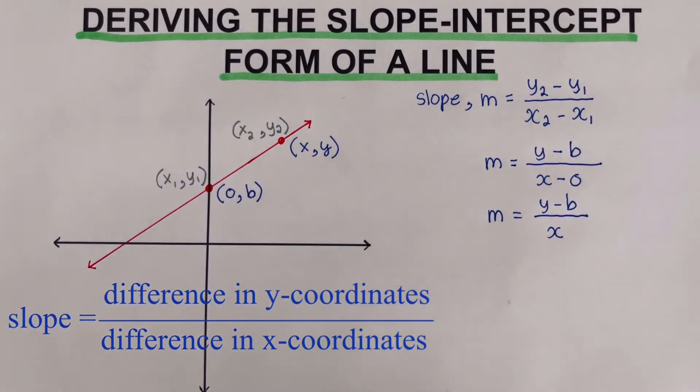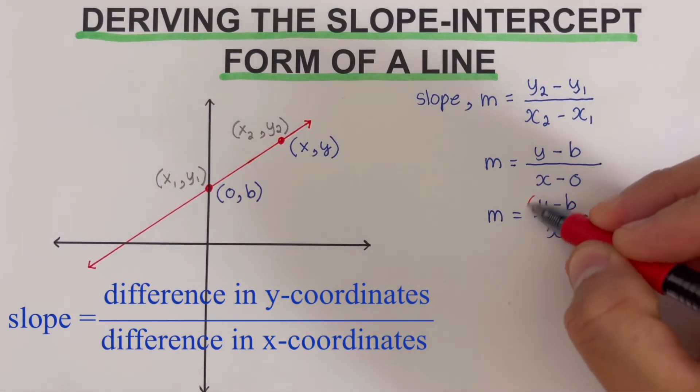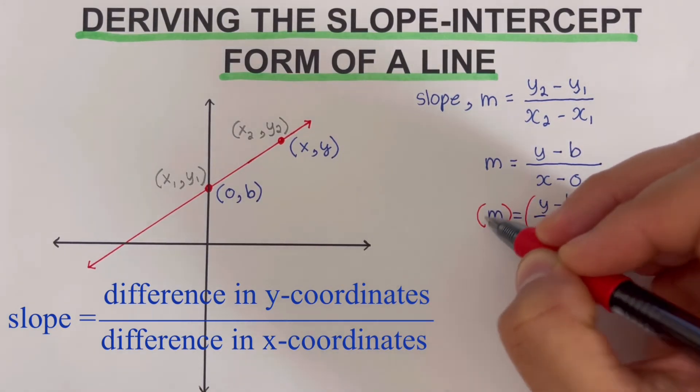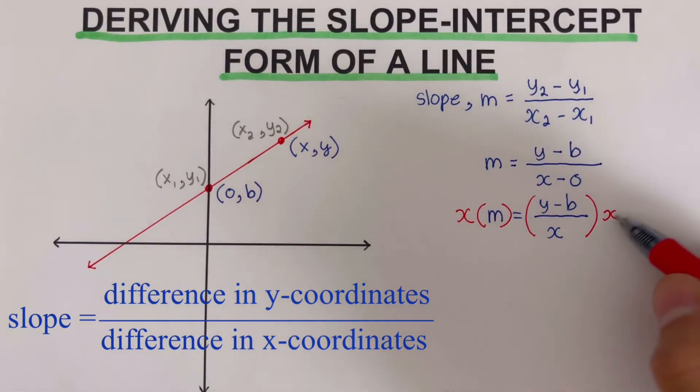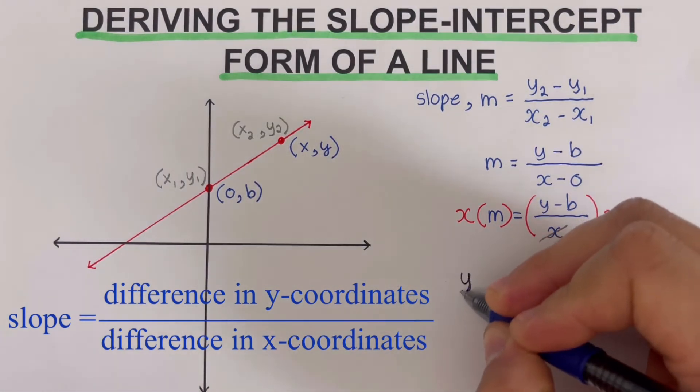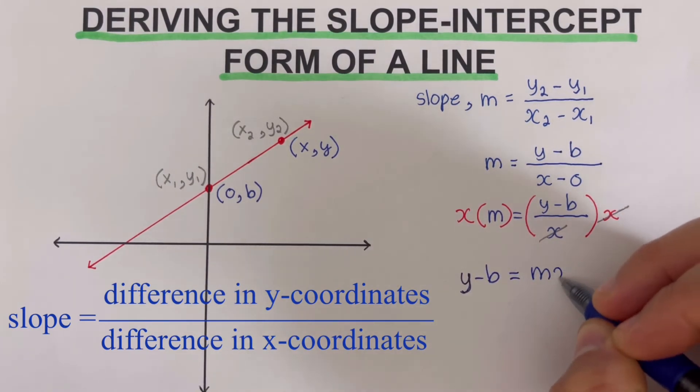Now we are going to isolate y by itself here. So what we do is we multiply x to both sides, so x is not on the denominator. So we multiply the right side by x, and we multiply the left side by x as well. So this gets crossed out, and so we are left with y minus b equals mx.